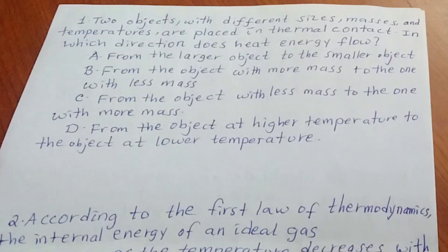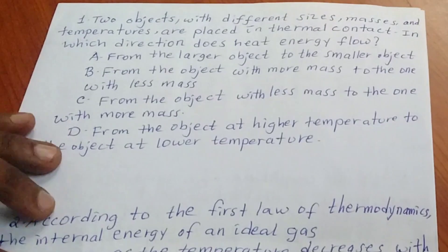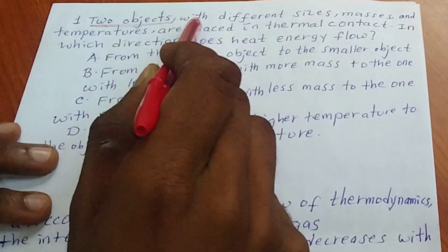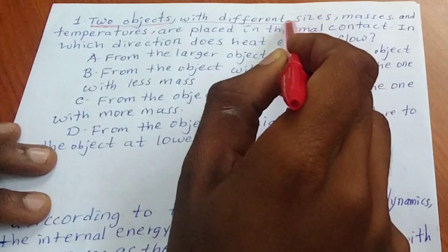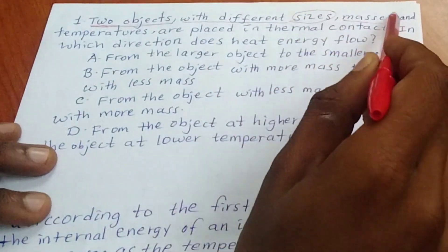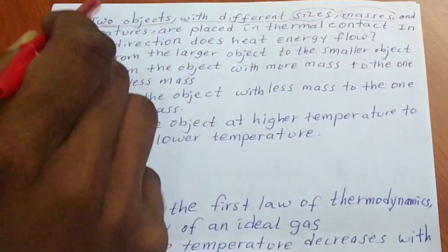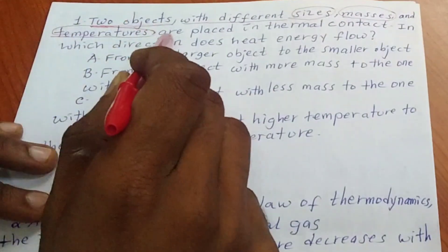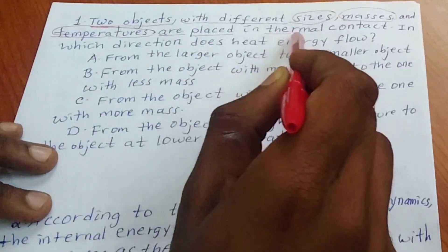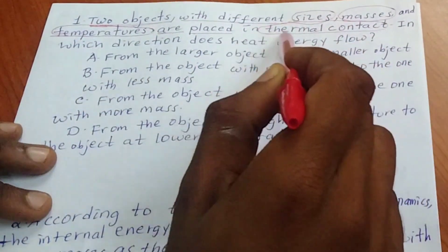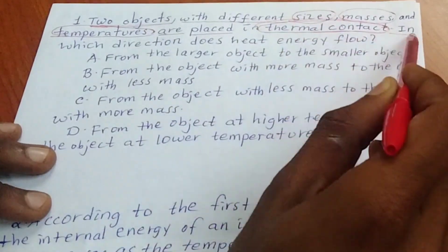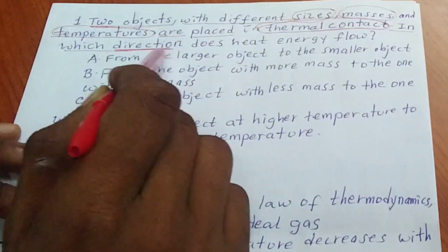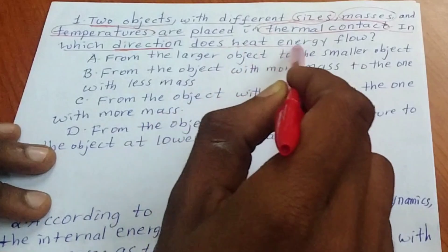Two objects with different size, masses, and temperatures are placed in thermal contact. In which direction does heat energy flow?